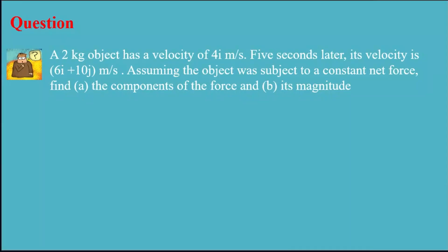In this problem I have an object with a mass of 2 kilograms and a velocity of 4i. After 5 seconds the velocity reaches 6i plus 10j meters per second. I need to find the force and the magnitude of that force. Let me write down what I have. My mass is 2 kilograms, my initial velocity is 4i, and my final velocity is 6i plus 10j. I'm looking for force.